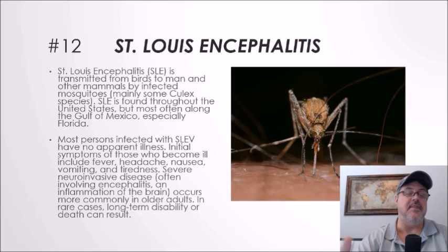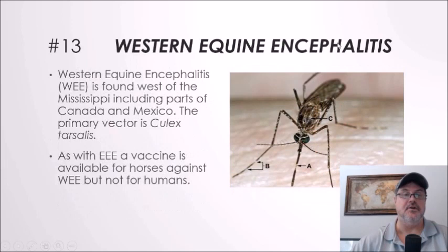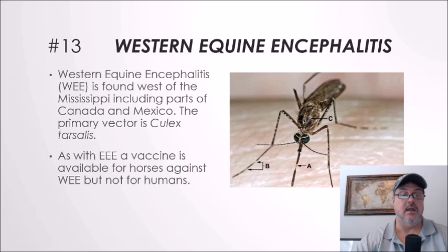Number thirteen: western equine encephalitis. Western equine encephalitis is found west of the Mississippi, including parts of Canada and Mexico. The primary vector is Culex tarsalis. As with triple E, a vaccine is available for horses but not for humans.